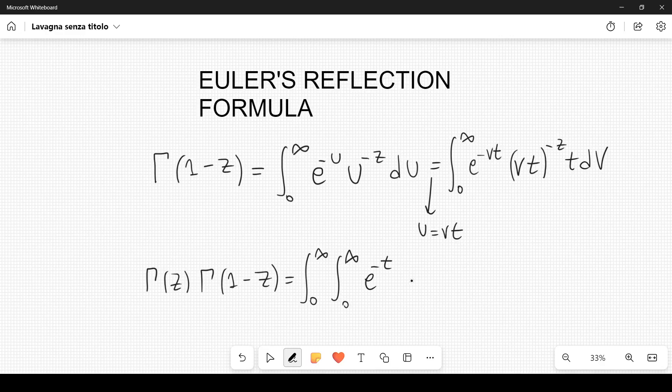e to the minus t, t to the z minus 1, and this comes from the gamma function, the gamma of z, so this will be integrated over t. But then we also have this integrand, so we have e to the minus vt, times v to the minus z, so let's write it like this, v to the minus z.